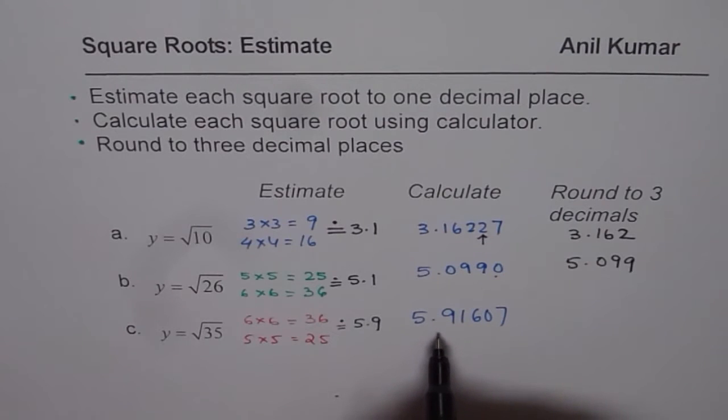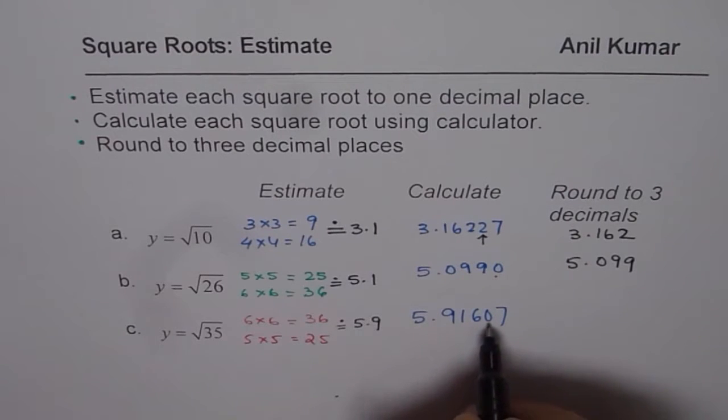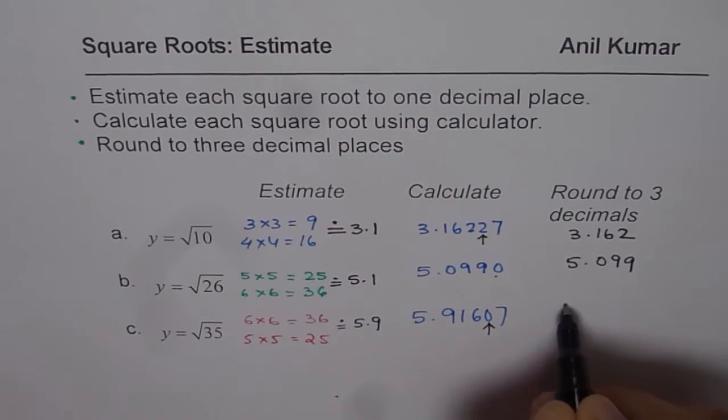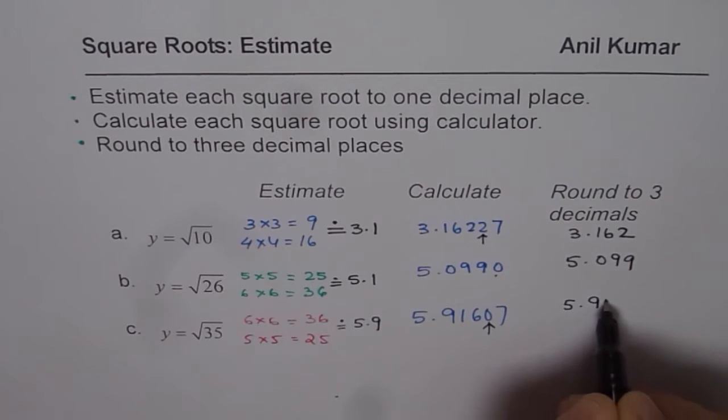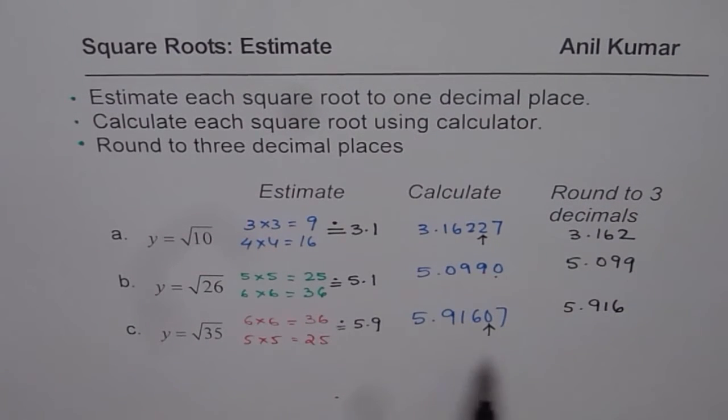For the last one, we look at the fourth decimal place. This number is less than 5, so our answer rounds to 5.916. That is how you round your answers to 3 decimal places.